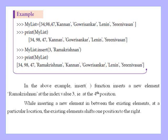Now we will use the insert function. We call mylist.insert(3, 'Ramakrishnan'). The position index values are 0, 1, 2, 3 — so index 3 is the fourth position in the list. We insert 'Ramakrishnan' at index 3, then print(mylist) to check the output.